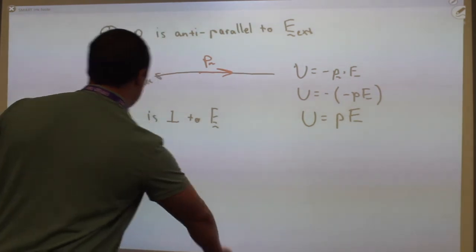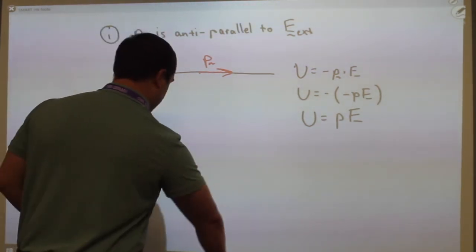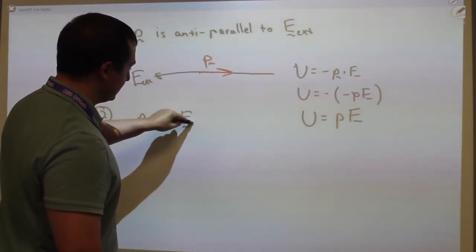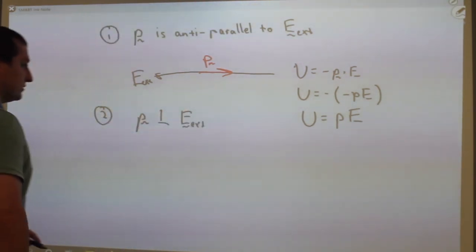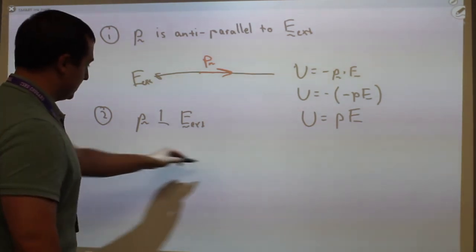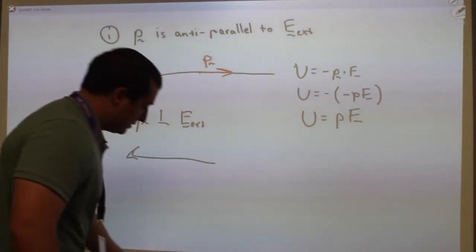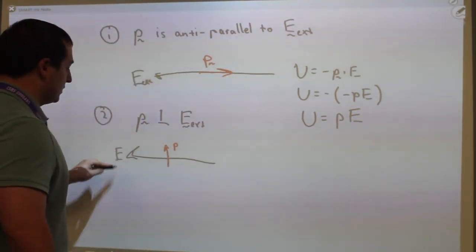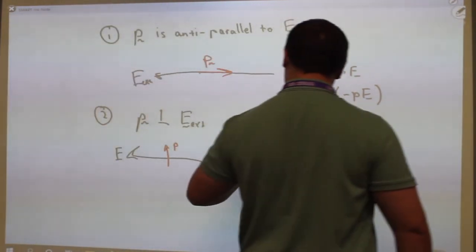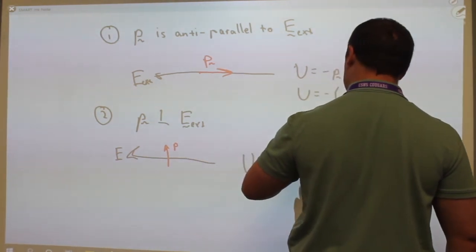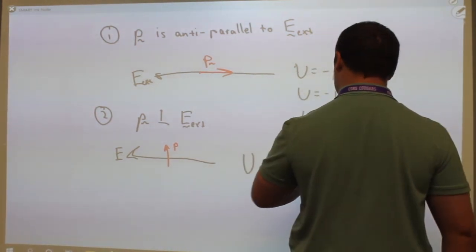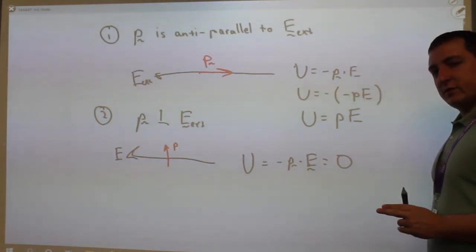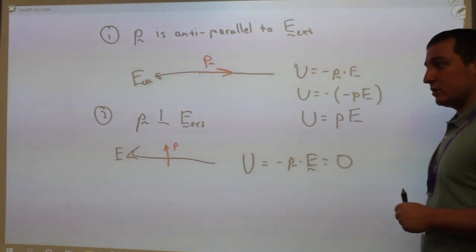The second case: P is perpendicular to the external electric field. U = −p · E. They're perpendicular to each other, so this is zero. The potential energy is zero, but you can go below zero.